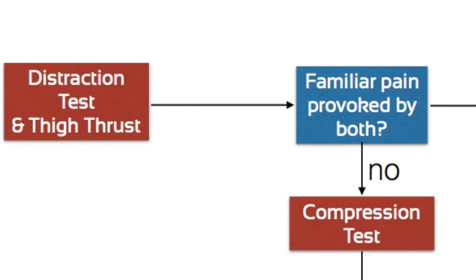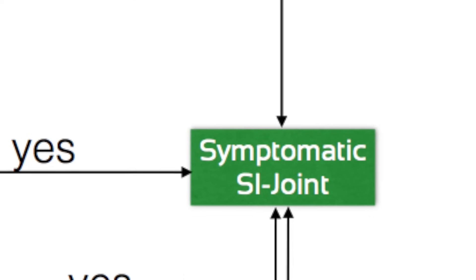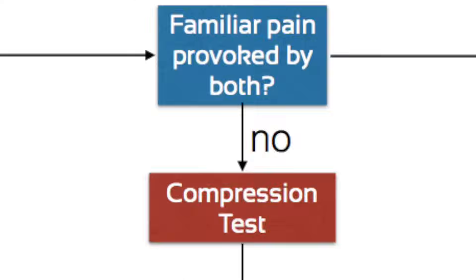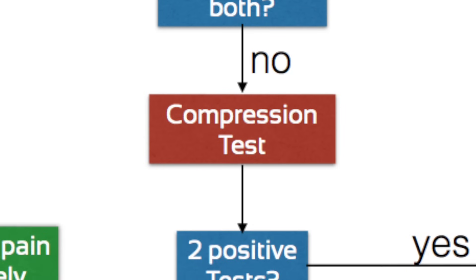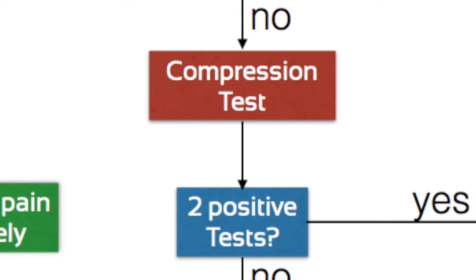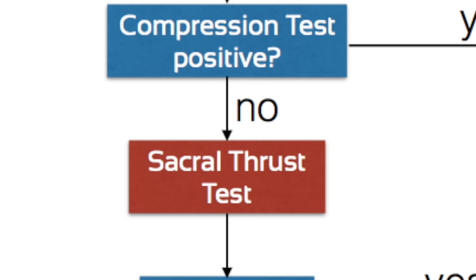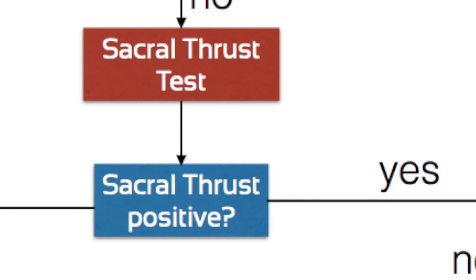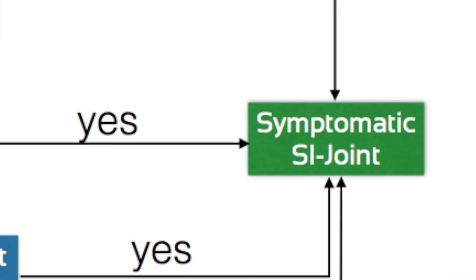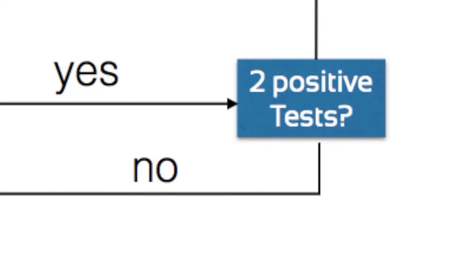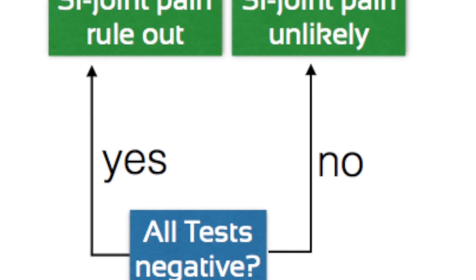Mark Laslett, the author of the cluster, proposes a diagnostic algorithm to evaluate the outcome of each individual test. Overall, the rule of thumb is that two out of four positive tests are needed to diagnose a symptomatic SI joint. If the first two tests are positive, the SI joint is likely the source of pain and no further testing is needed. If you fail to provoke pain during the first two tests, continue with the third test. If this test is positive and you now have two positive tests, the SI joint is likely the source of pain. In case the third test is negative as well, continue with the sacral thrust test. If two tests are positive, the diagnosis is likely a symptomatic SI joint. If less than two or even all tests are negative, then SI joint pain can be ruled out or is at least unlikely.